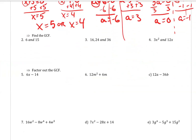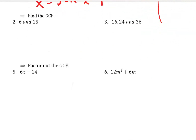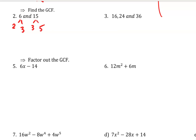Greatest common factor. We learned how to factor when we were doing radicals, so let's factor each of these numbers. 6 is 2 times 3. 15 is 3 times 5. So my greatest common factor is 3.